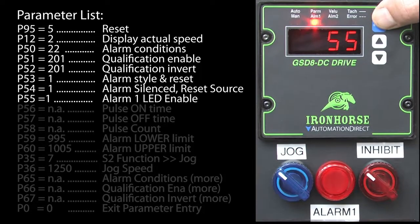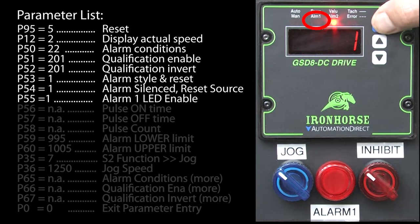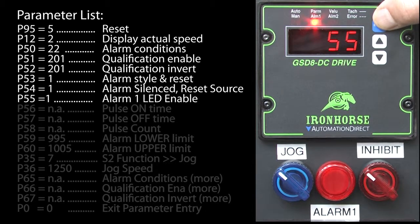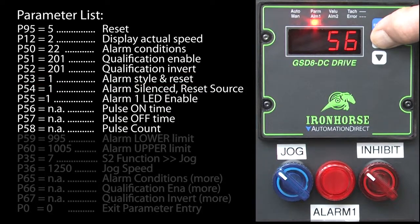In parameter 55 let's enable the front panel LED for alarm 1 so this guy will blink when we have an alarm. Parameters 56, 57 and 58 are for pulsed outputs, but we chose a constant output so we can skip those.